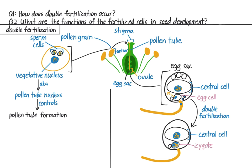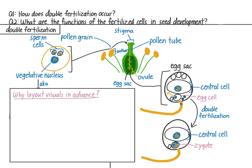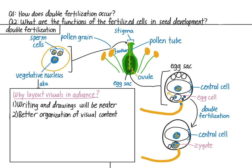Before hitting the record button, it's a good idea to lay out all your visual content in advance. What you're seeing here is a layout of all my visuals that I showed in my double fertilization video. First, you can take your time writing words and making drawings so they'll be a lot neater. Second, you can be more careful about how you lay out your visuals on the page. For example, if your content has three parts, you could separate the page into three parts using straight lines, like this.